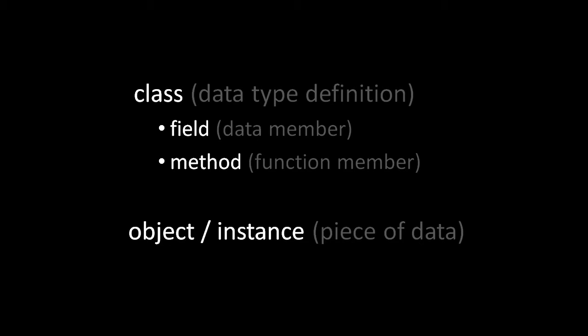Hence the term object-oriented programming. The other kind of member of a class is called a method — basically a function associated with that class. The idea is that these methods are the operations for acting upon the data, the fields of the class. A very important thing to understand is that when we instantiate a class — when we produce an instance from a class — that instance object in memory gets its own fields separate from the fields of all other instances of the same class.